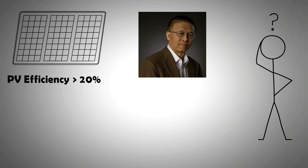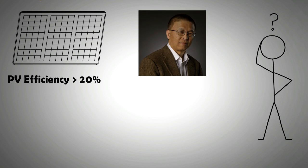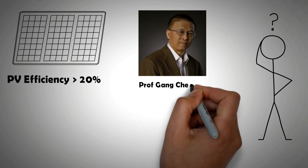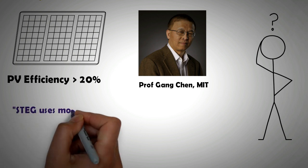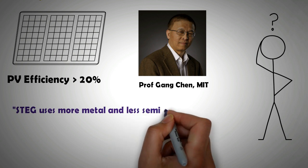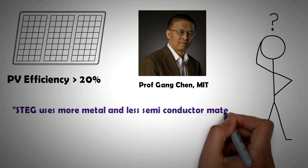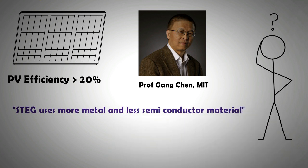The answer is provided by Professor Gang Chen, the head of mechanical engineering department at MIT. He explains that STEG technology mostly uses metals. The absorbing surface is made up of aluminum and copper and is coated by light-absorbing materials. STEG uses a very small amount of semiconductor material, which is more expensive than metals.